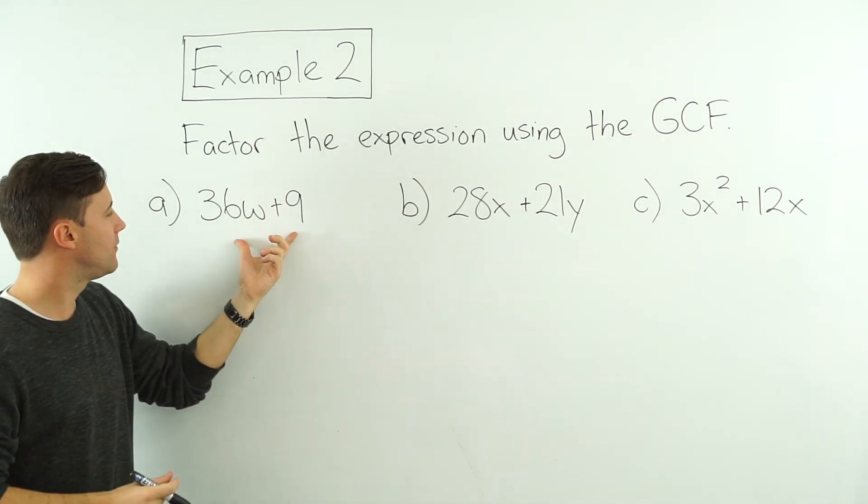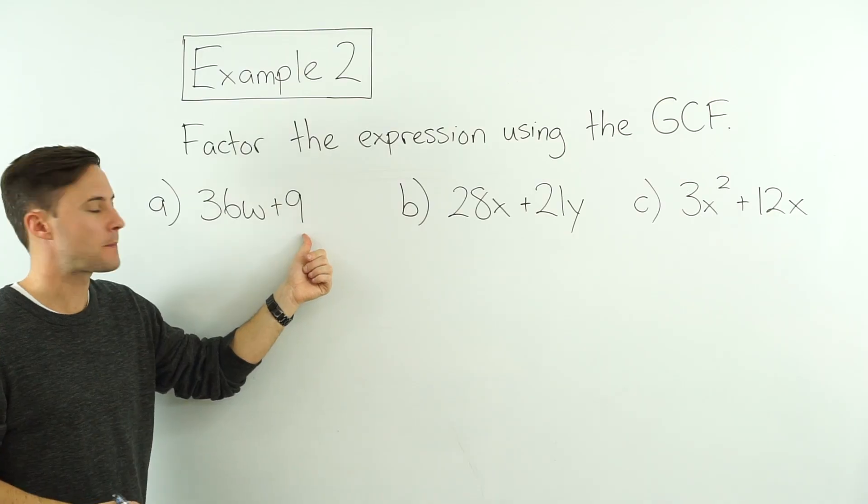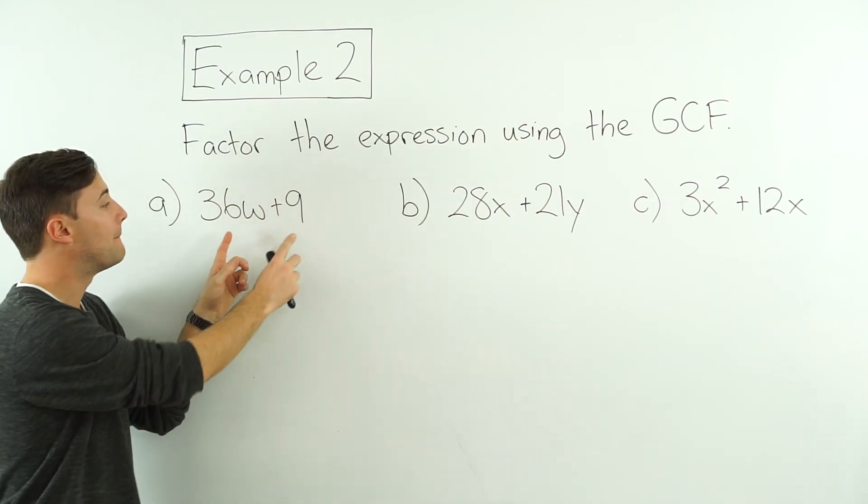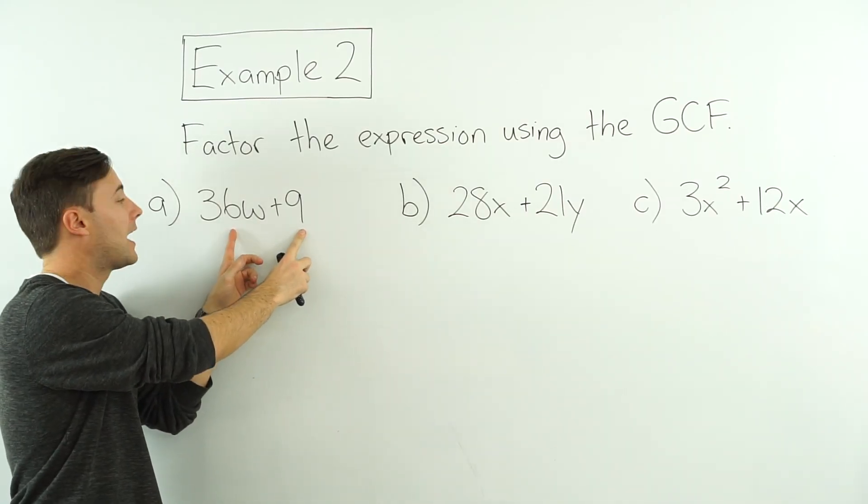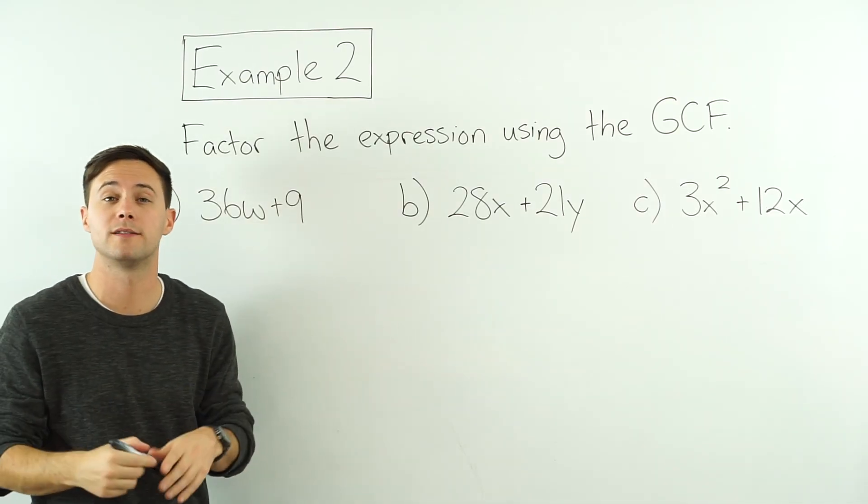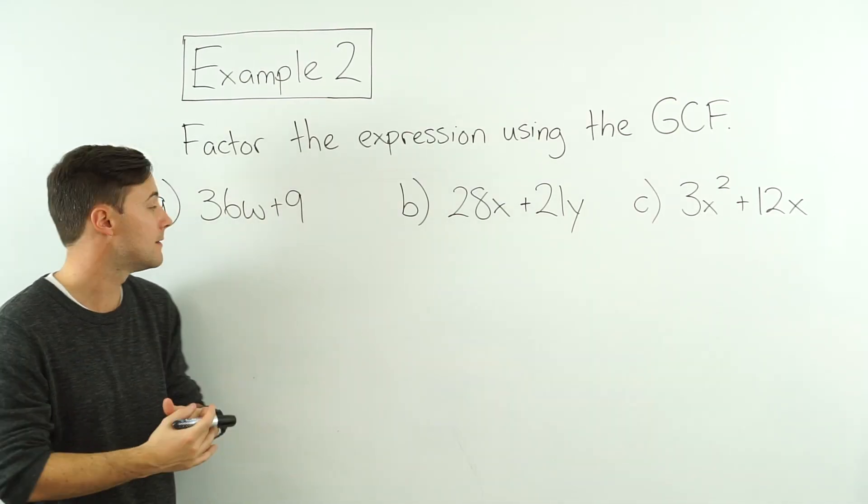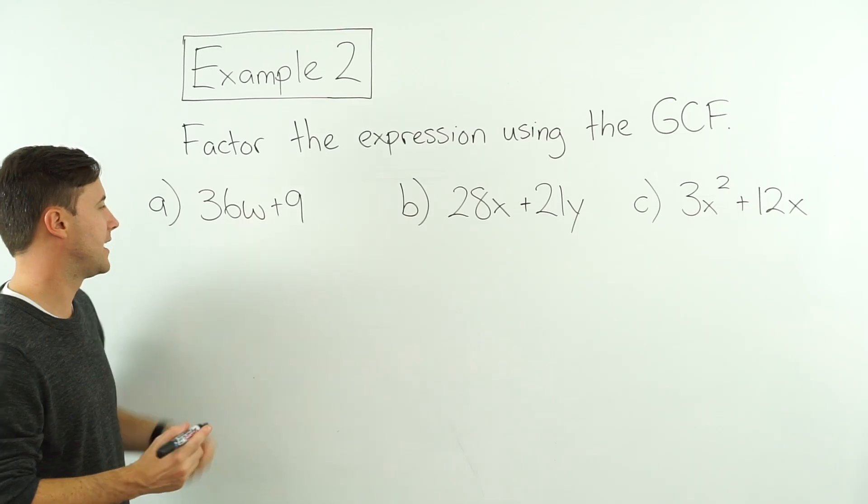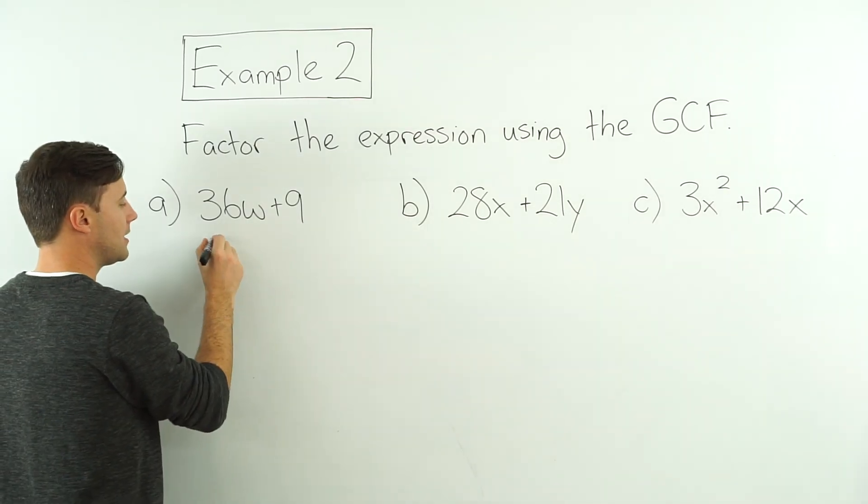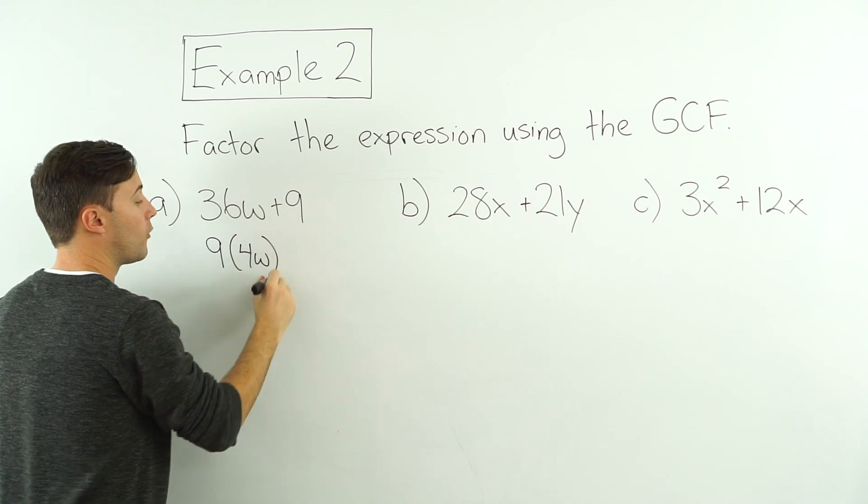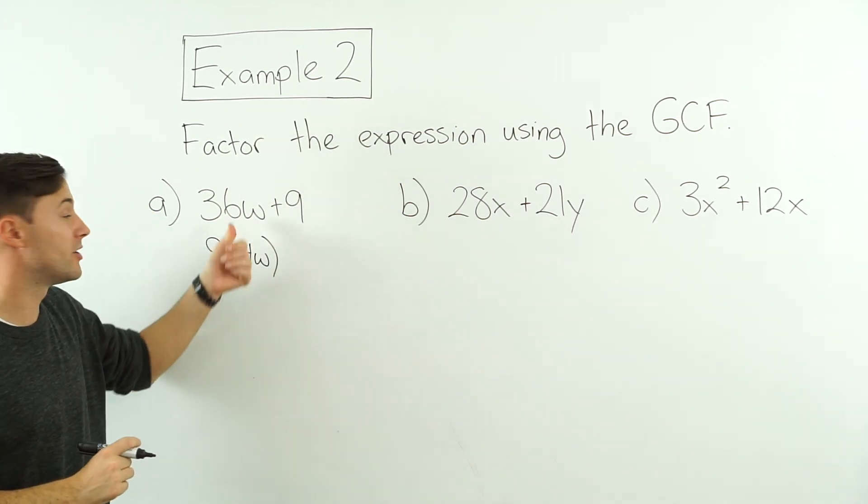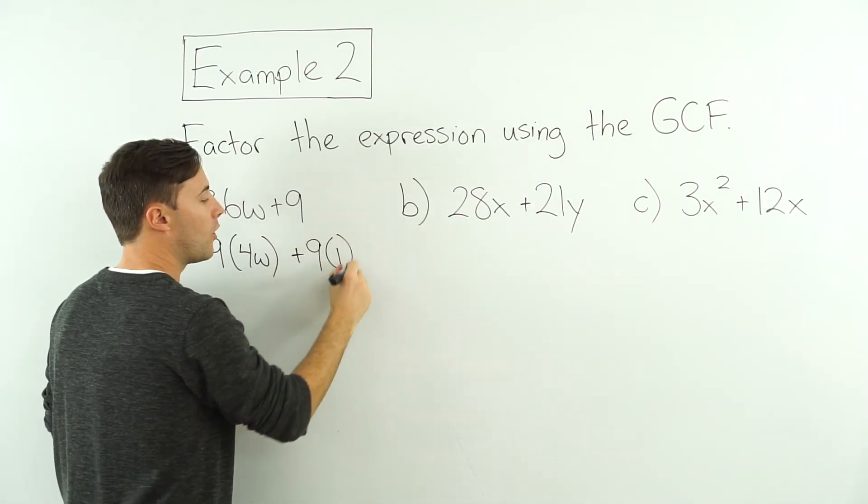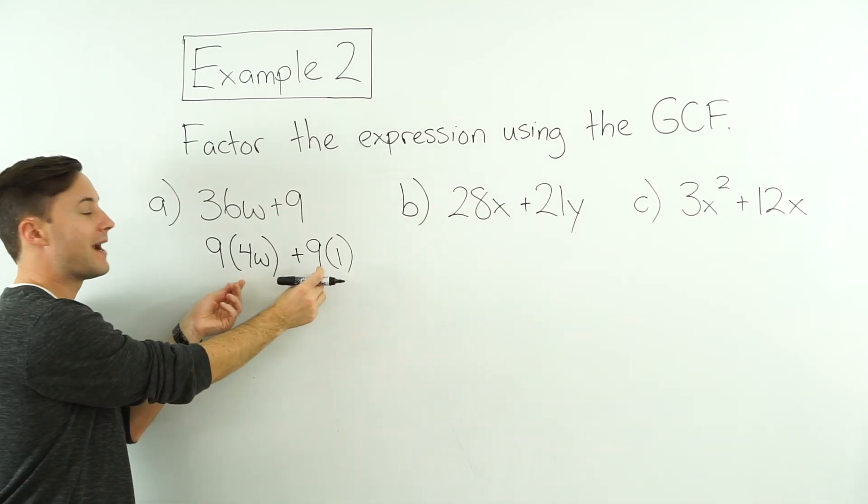So here, if you notice, well, I've got 36w and 9. There is no w here. So w is not going to be part of my GCF. I'm mainly going to focus on the 9 and the 36. And I think, well, what is the greatest common factor of 9 and 36? Well, it's 9, right? So if I think about 36w as 9 times 4w, right, 9 times 4w is 36w, plus, and 9 I can think of as 9 times 1. I am going to factor out that 9.